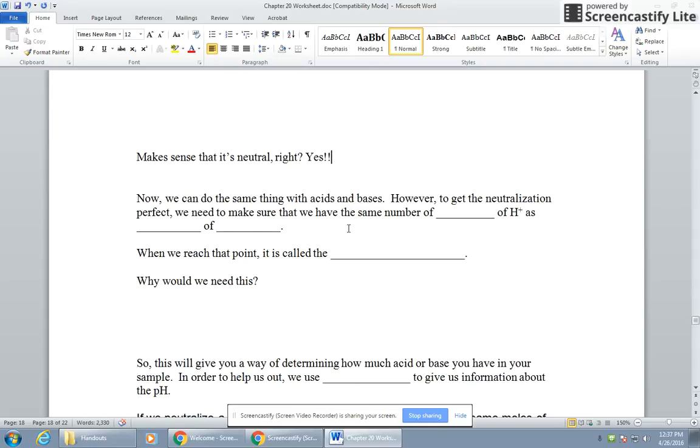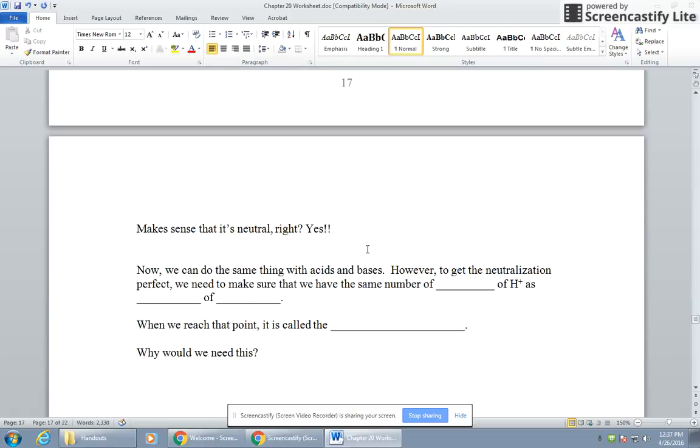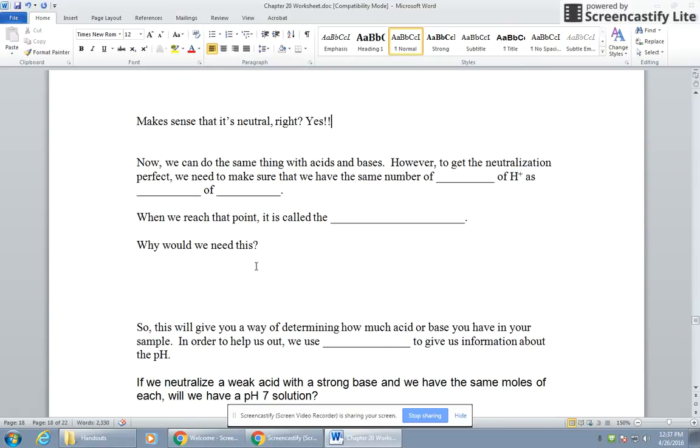If you have acids and bases that you're adding together in equal quantities, you'll get water. Makes sense, it's neutral. Now, we can do the same thing with acids and bases that we were doing just thinking about concentrations. To get the neutralization perfect, we need to make sure we have the same number of blank of H+ as blank of blank. This is OH-, and then your job tonight is to, what are we trying to get to be equal? Blanks of H+ and blanks of OH-. When we reach that point, it is called the equivalence point.